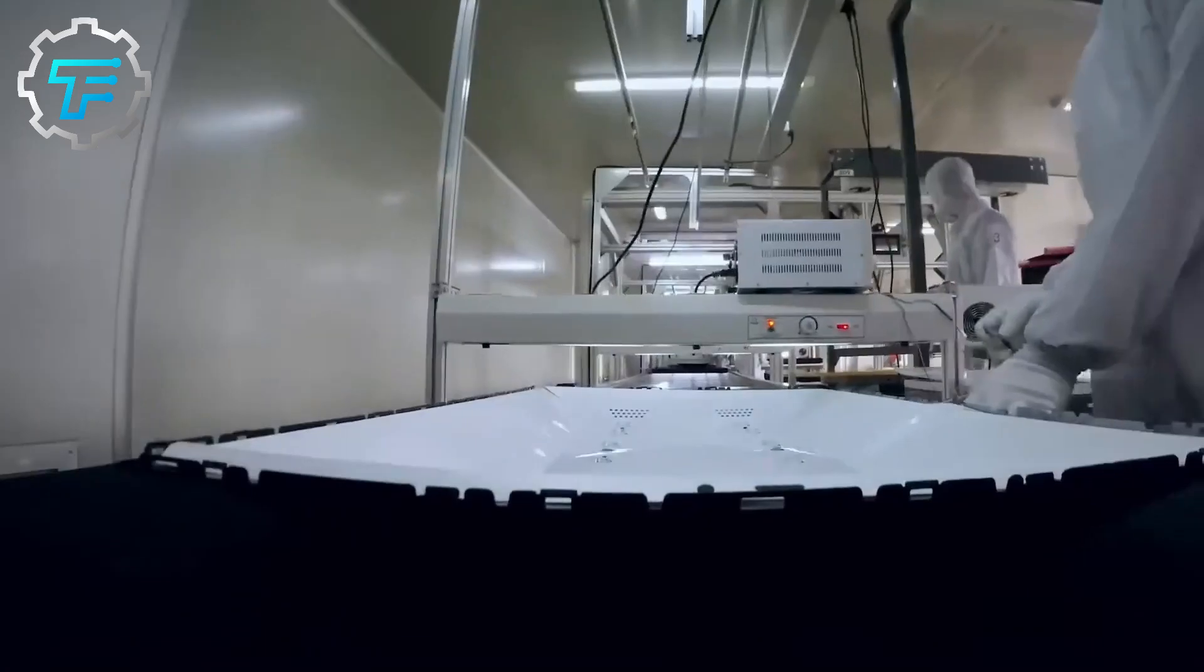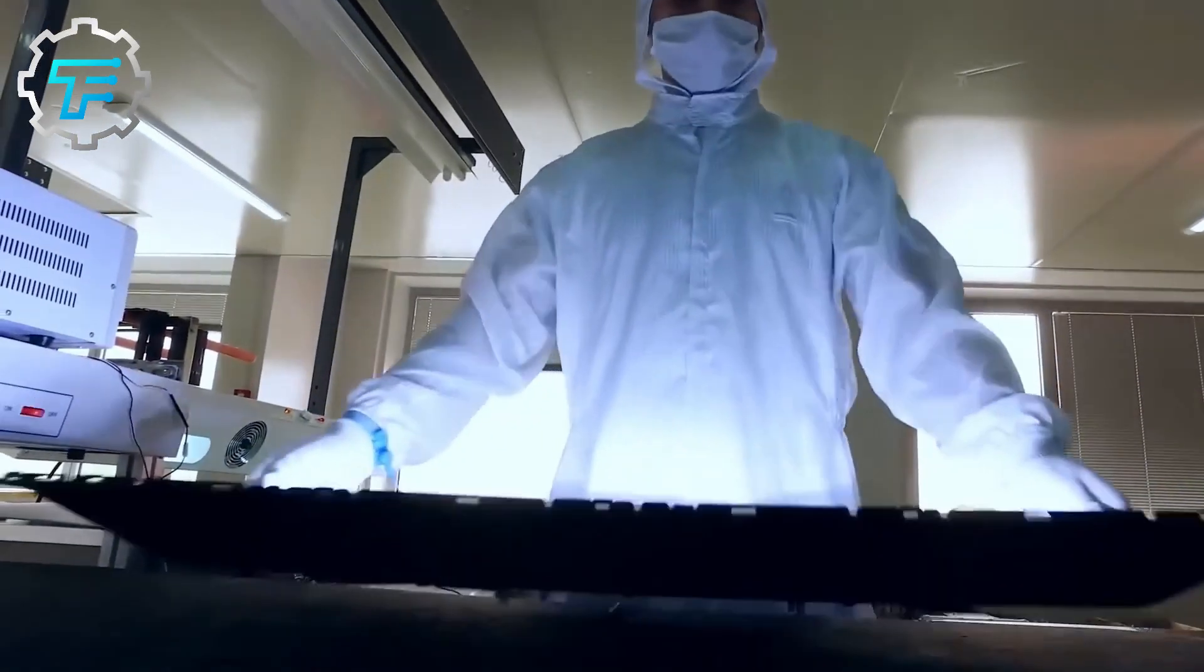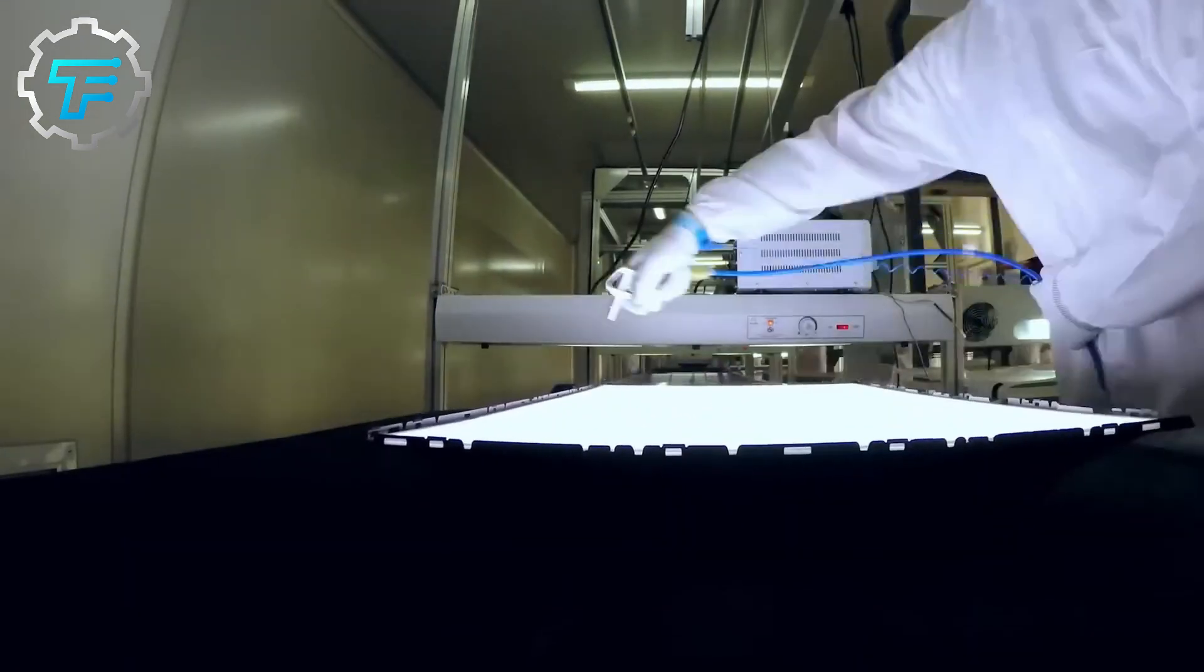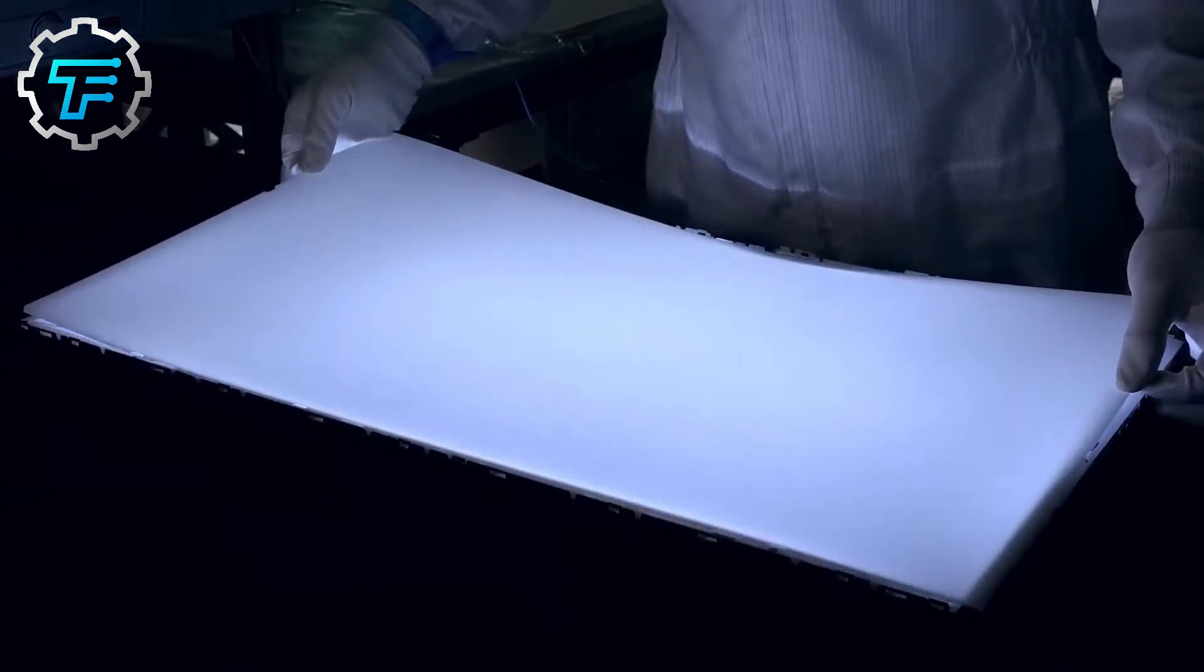There are three main configurations of LED backlights: full array, edge lit, and direct lit. In the full array, the LEDs are distributed evenly behind the entire screen to produce a more uniform backlight and more effective local dimming.